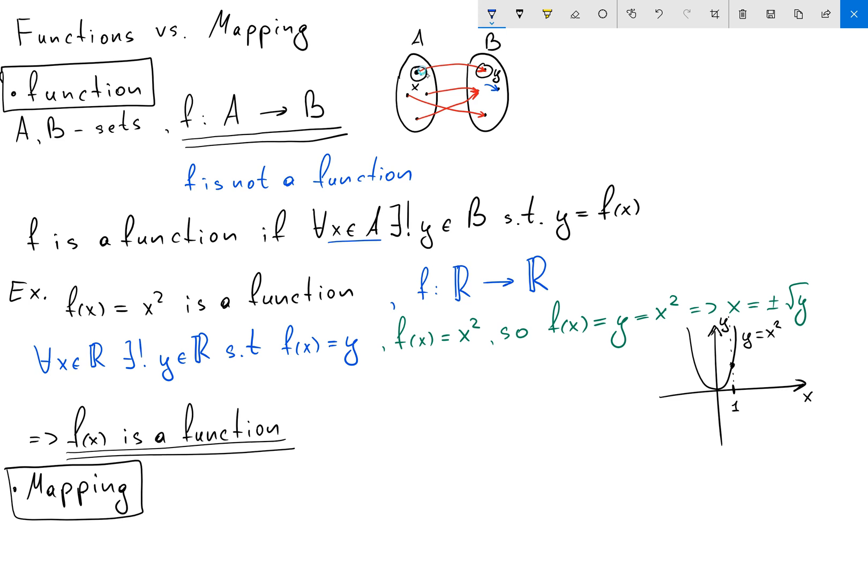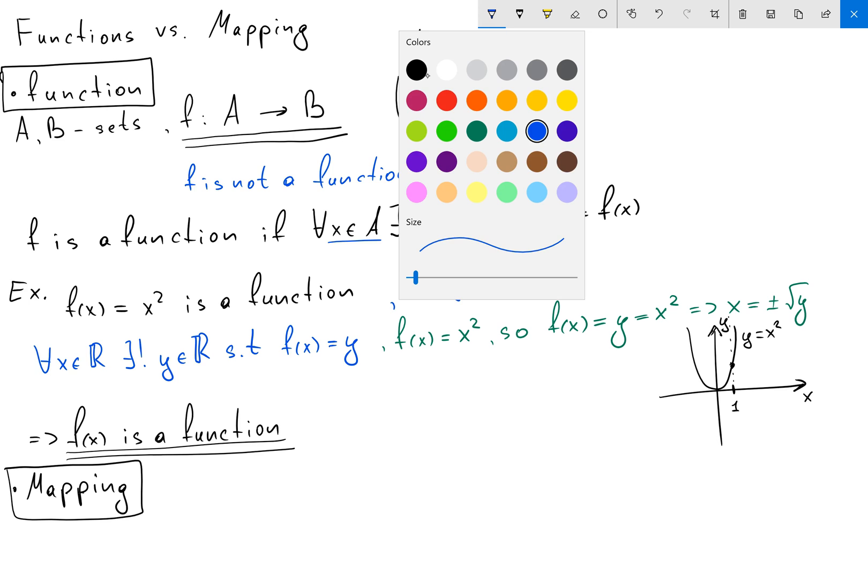So what we allow: we allow from our element x to go not to one element y in B, but to go to two elements y₁ and y₂ in B. And what is one of the examples of a mapping?